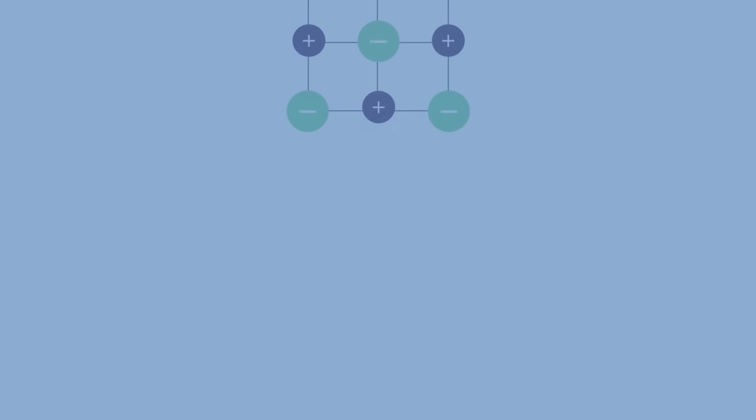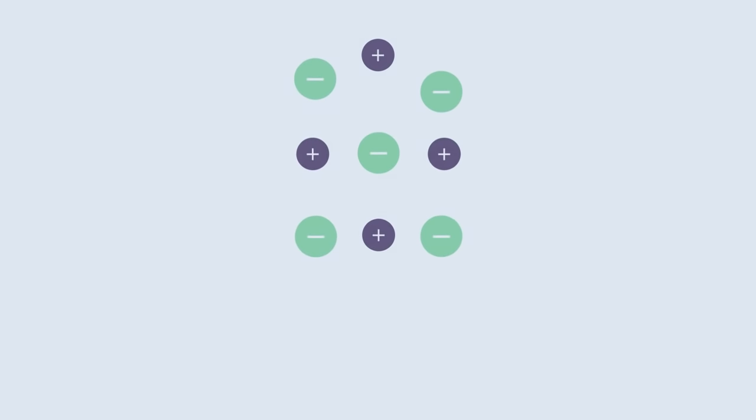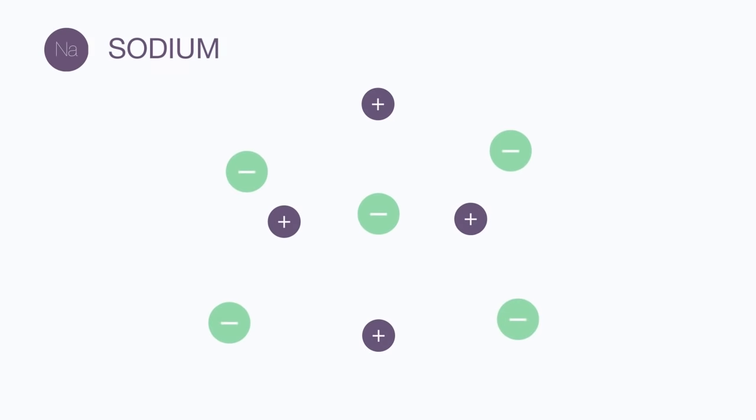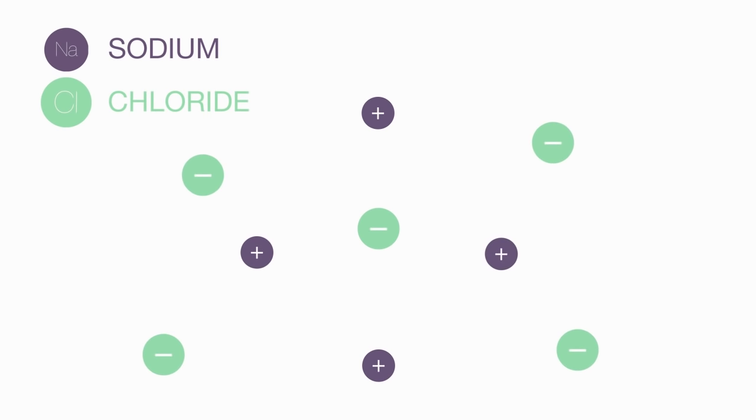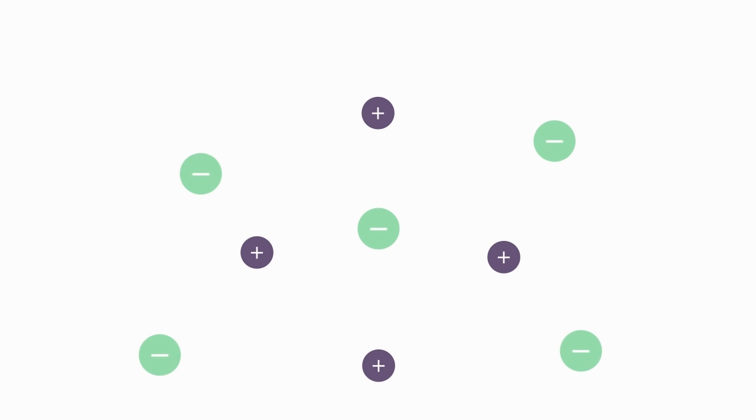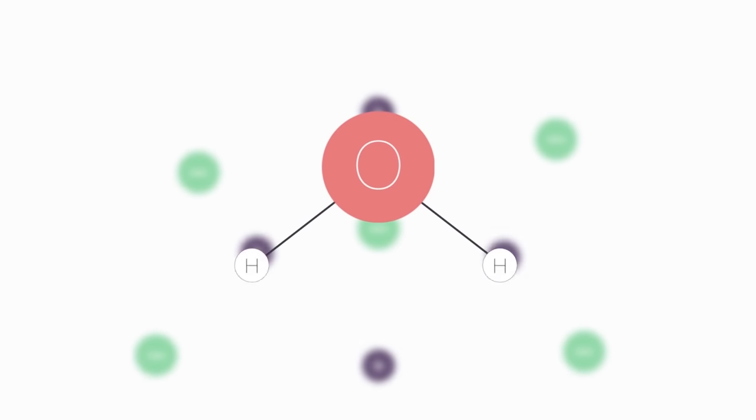So when we dissolve sodium chloride, it will dissociate into sodium and chloride ions. These ions become stabilized in water due to the polar nature of water.